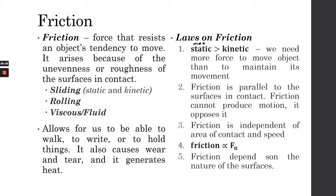Friction also depends on the nature of the surfaces. Depending on the properties of the objects, the friction will differ. For example, rubber shoes on concrete floor will have different friction compared to rubber shoes on grass or a tiled floor. The friction varies depending on the nature of the surfaces in contact. The main things to remember: static friction is always larger than kinetic friction — that's why it's harder to force an object to move than to maintain its movement — and friction is proportional to the normal force.